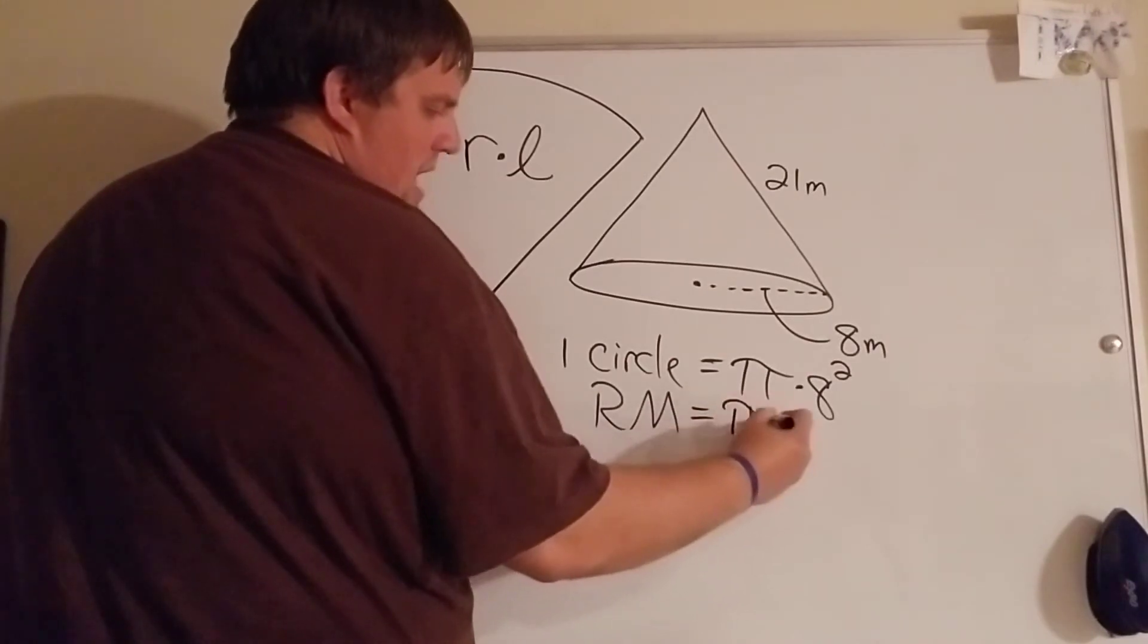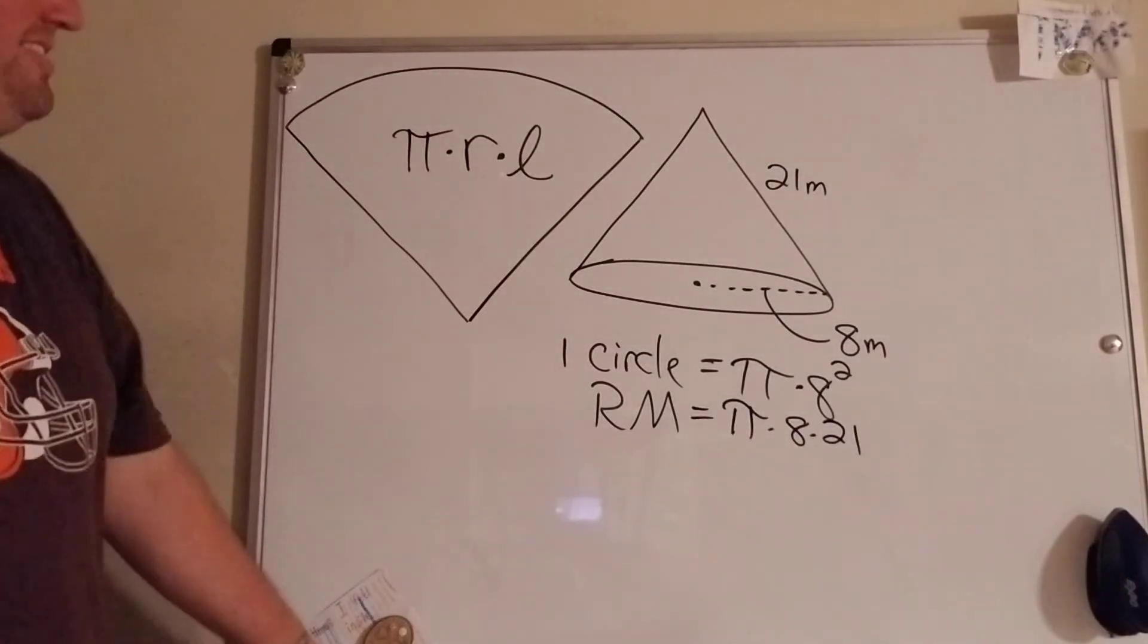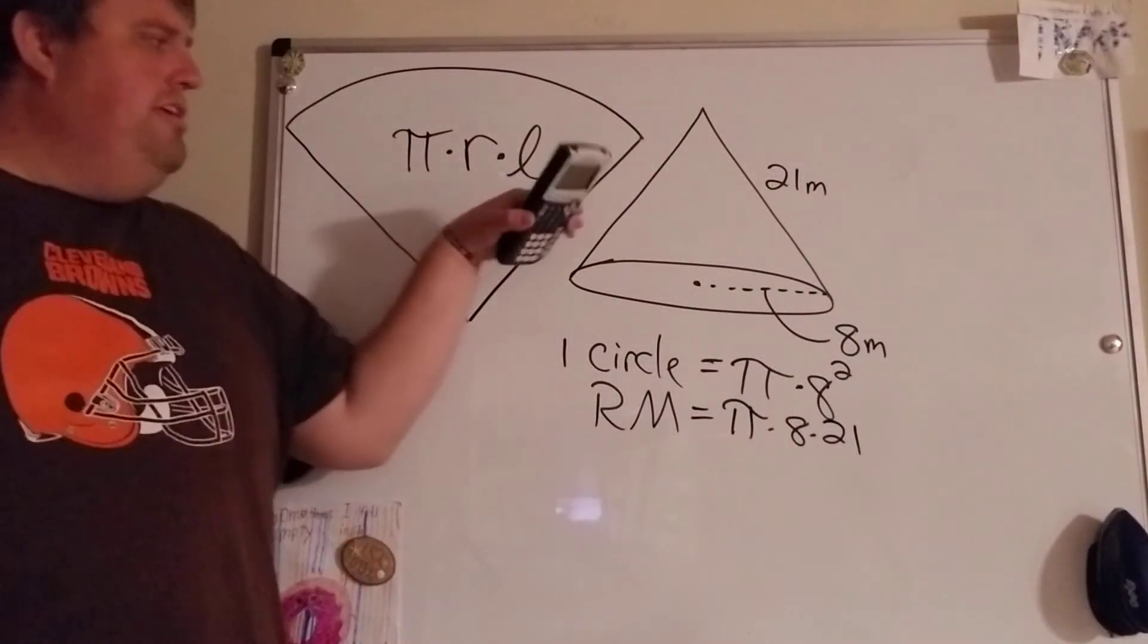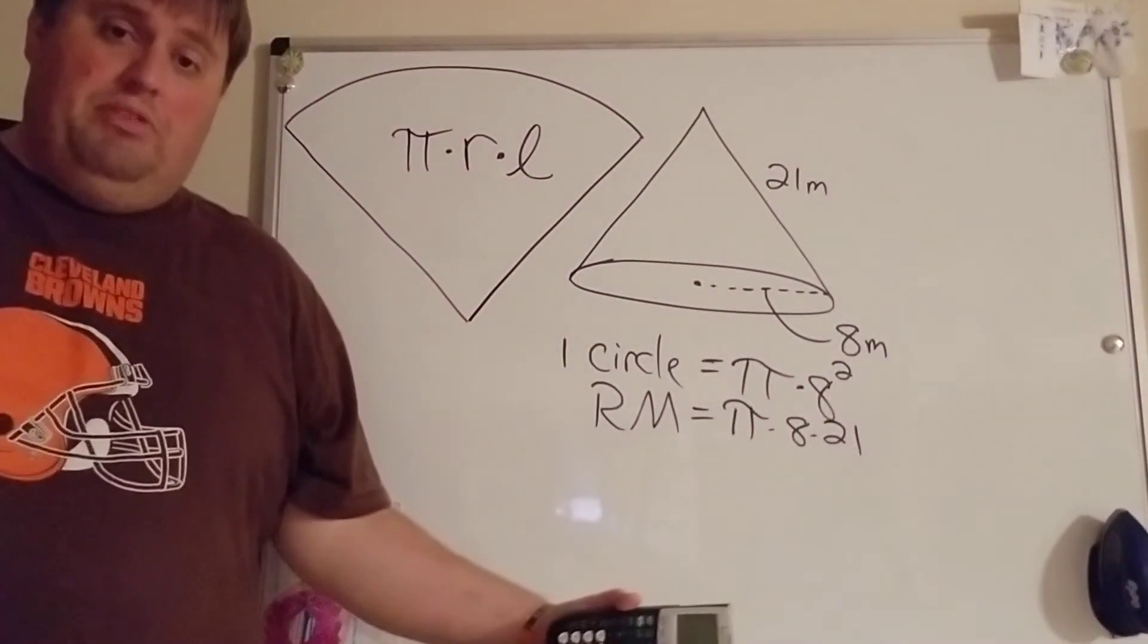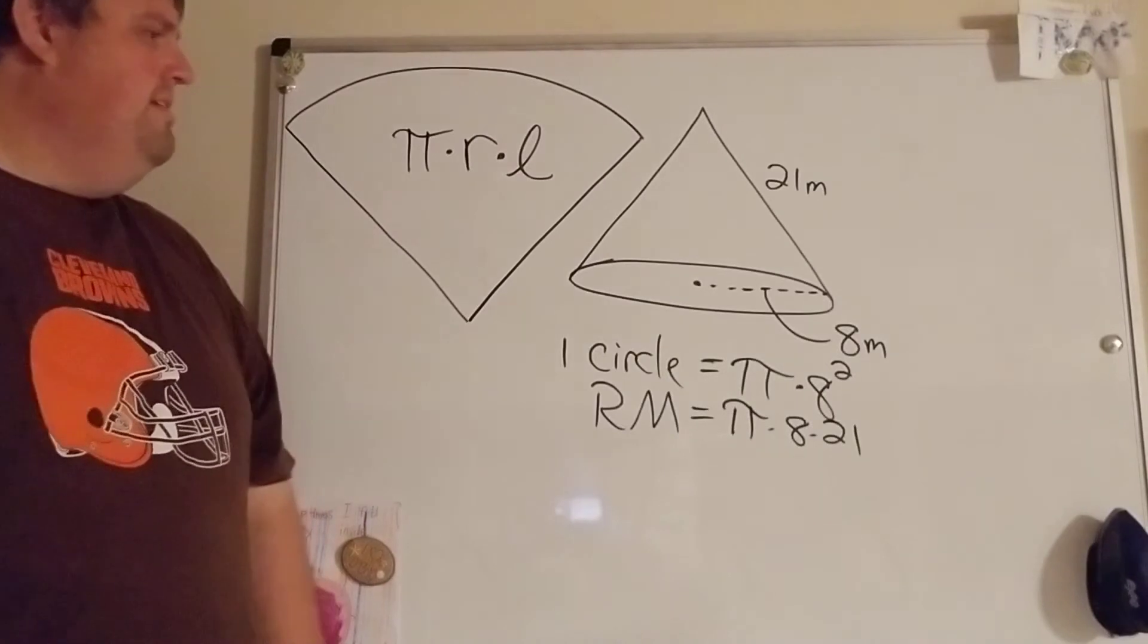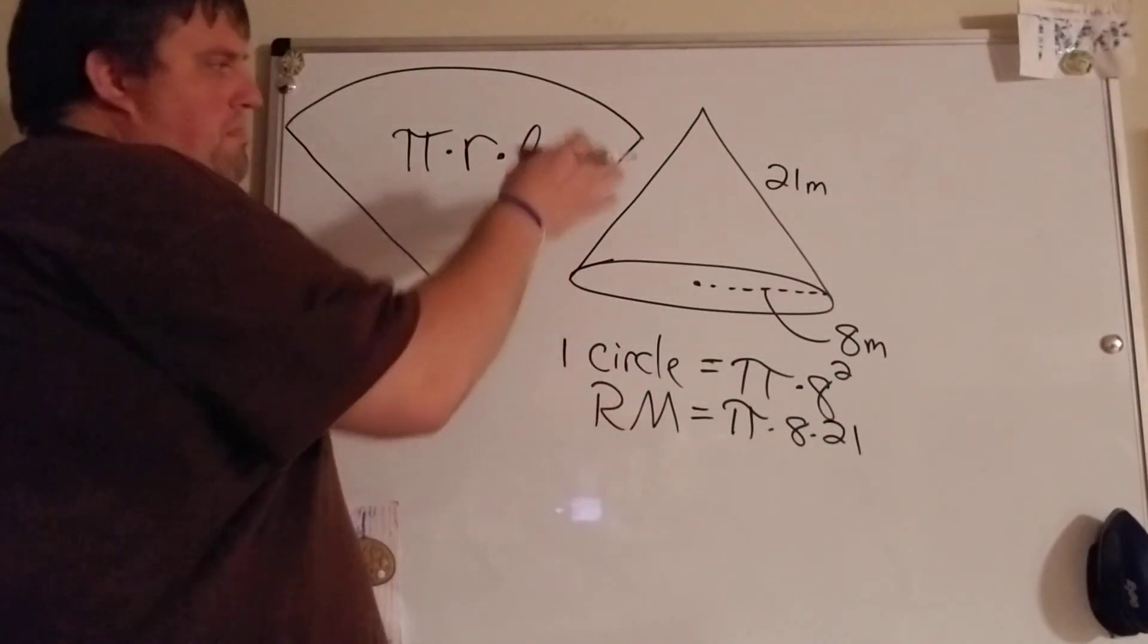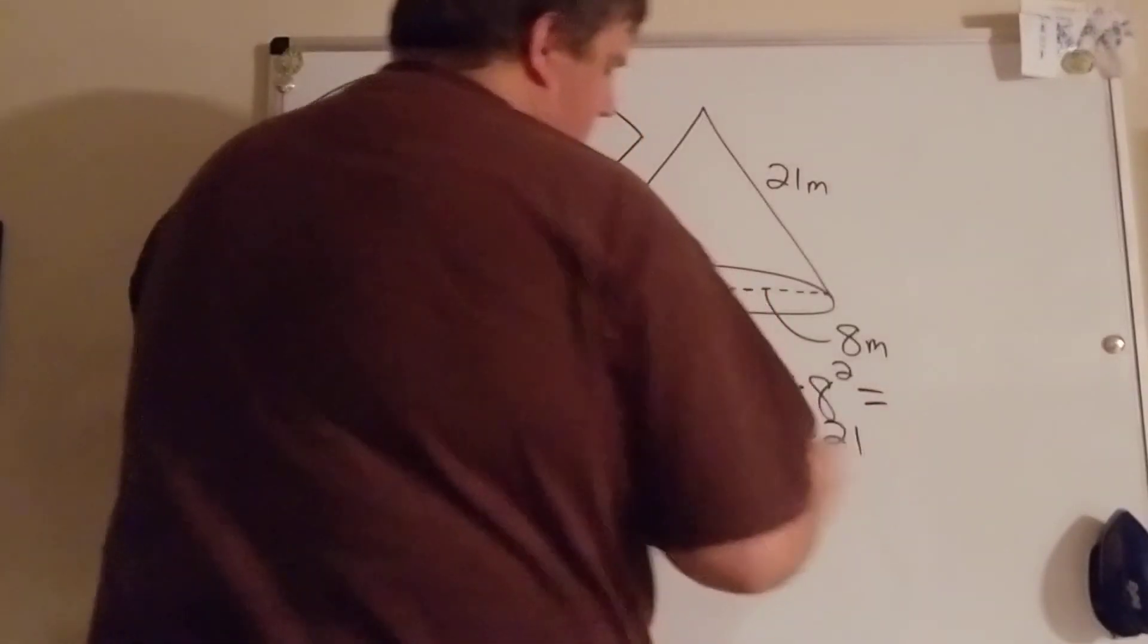So this round middle is gonna be pi times 8 times 21 like that. And that's it for cones. That's the nice part, even though it has something that you kind of need to know. Obviously make sure you put that in your notes so you have it for your test. It's always just gonna be one circle and then that round middle part, the sector if you will.